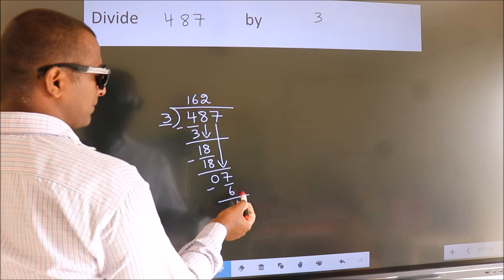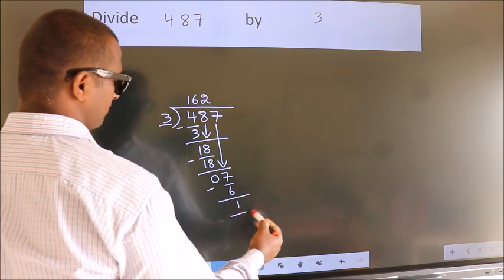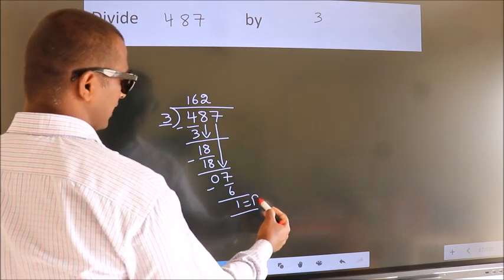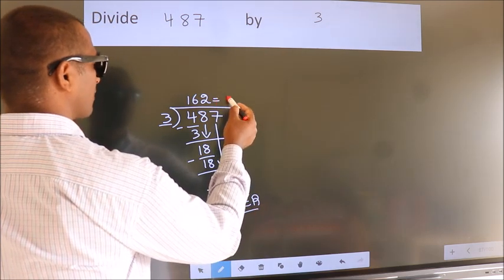No more numbers to bring it down. So, we stop here. This is our remainder. This is our quotient.